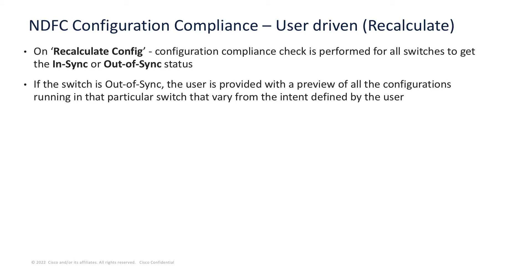When doing a Recalculate Config, it's done at a fabric level and will quickly mark switches as in sync or out of sync depending on whether the intent resides on the switch or not. If switches are marked out of sync, the user will be provided with all the preview configurations — basically the expected configuration that is deviating from the running configuration — so the user can preview and see exactly how it deviates and what will be pushed to the switch.